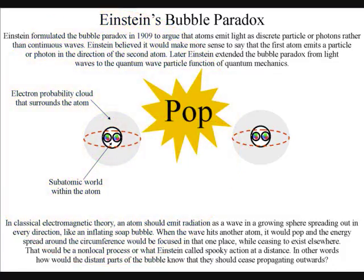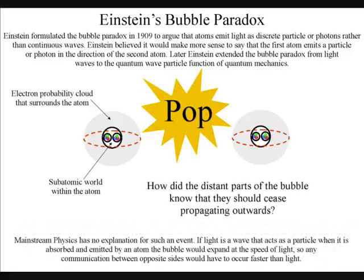When the wave hits another atom, it would pop and the energy spread around the circumference would be focused in that one place while ceasing to exist elsewhere. That would be a non-local process, or what Einstein called spooky action at a distance. In other words, how would the distant parts of the bubble know that they should cease propagating outwards?